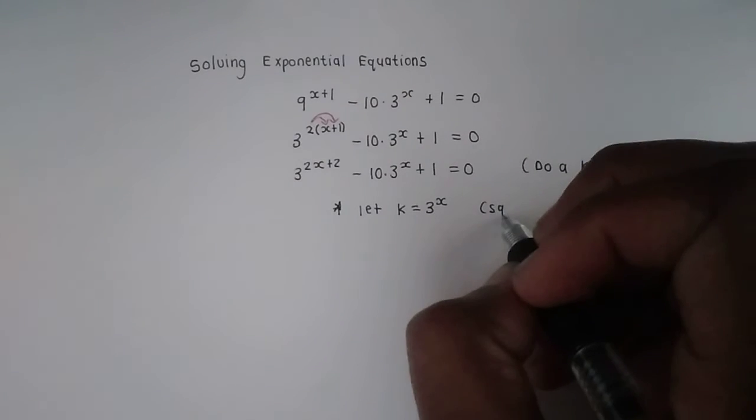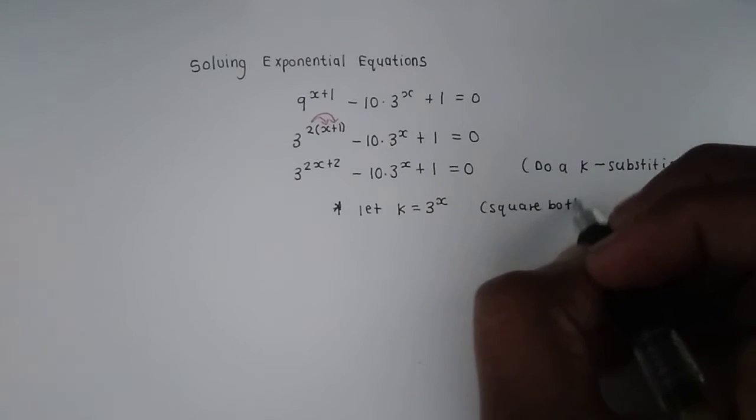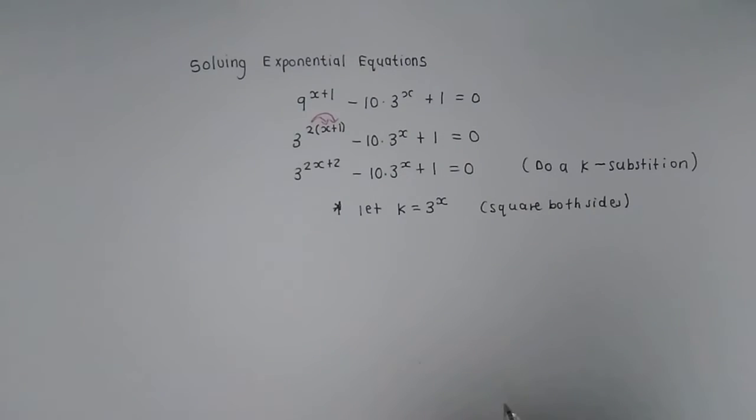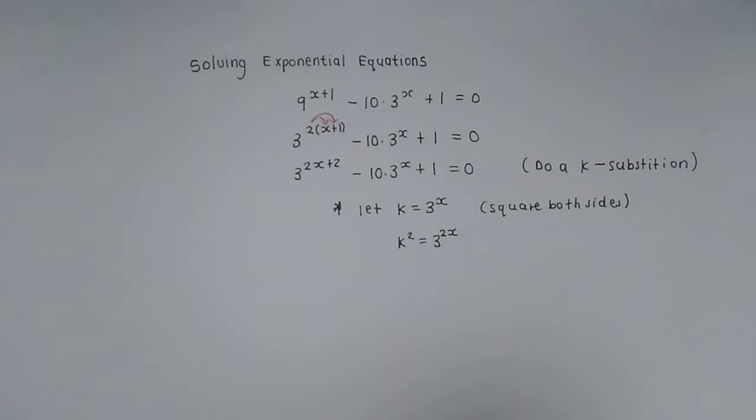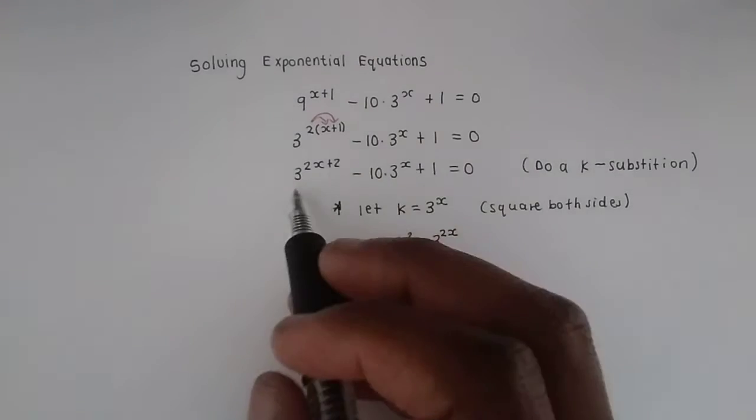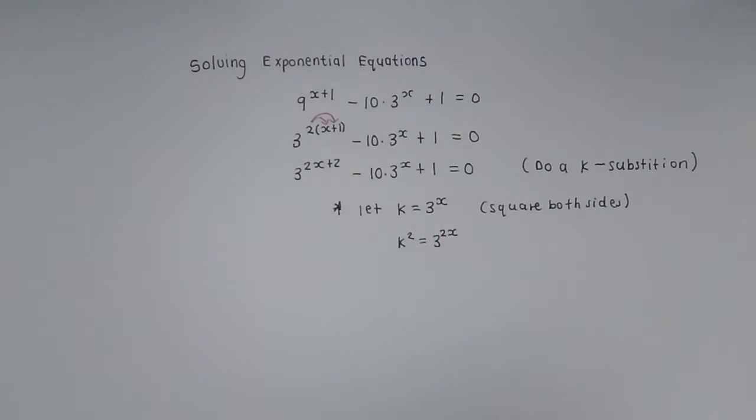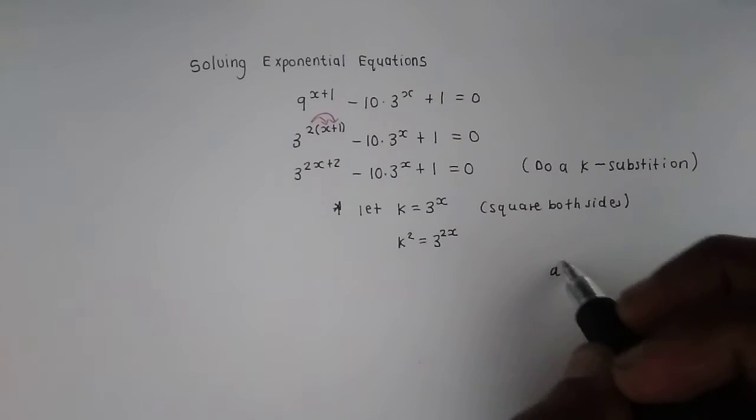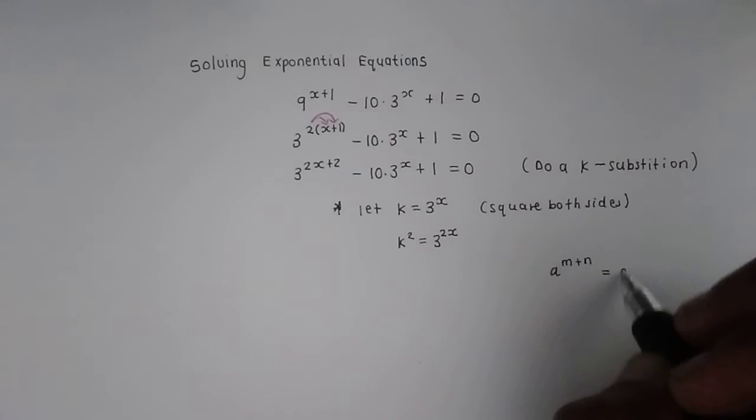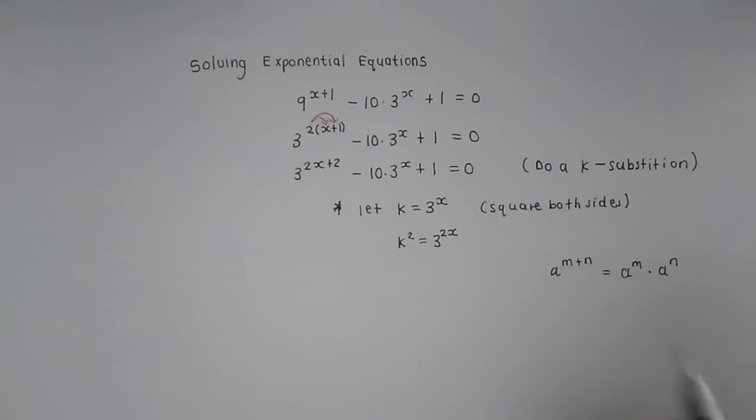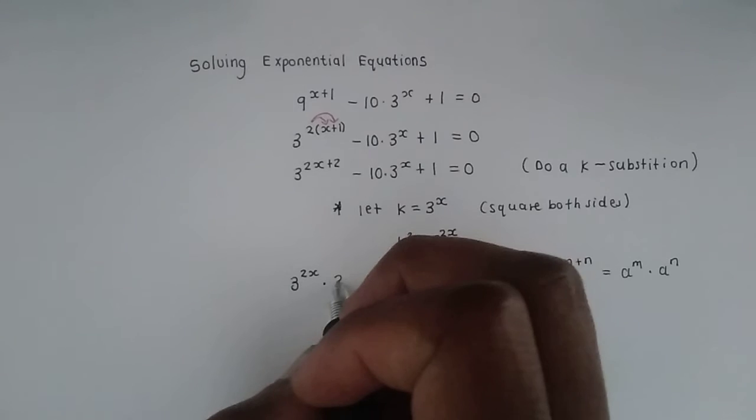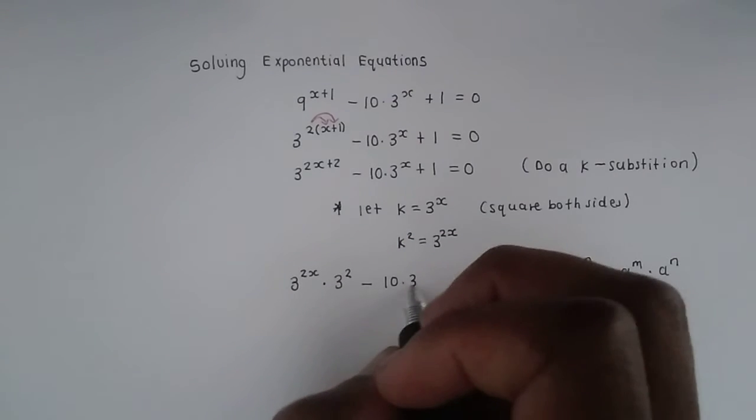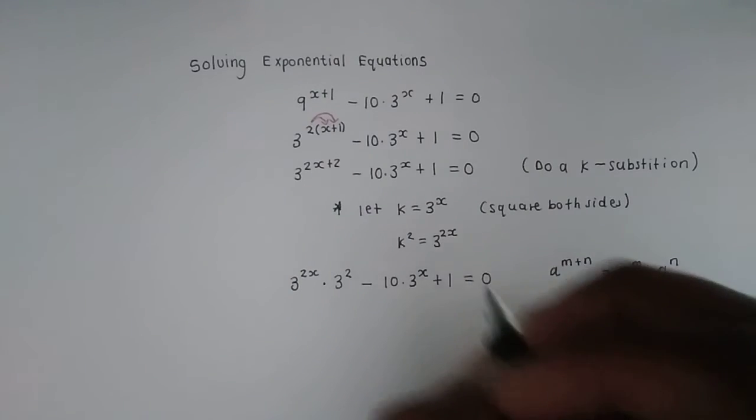Now, if you square both sides over here, you are then going to get k squared is equal to 3 to the 2x. Now these are the two k substitutions we have to work with. Let's go back to our original equation and break apart this first term. When we break this apart, we mean that we apply the exponential law, which talks about multiplying the same base and adding the exponents. We apply it in reverse.